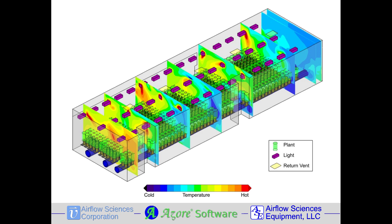Results from the initial ventilation system design indicated that one end of the room would be warmer than the other. The ability to virtually change any parameter — from flow rate to duct location to plant layout — individually or in combination, provides an efficient means of optimizing the airflow throughout the entire facility.